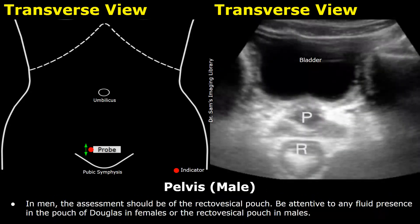In males, you will find the bladder, and posterior to the bladder you will find the prostate. The rectum will be posterior to the prostate. The pelvic bone shadows are visible here. The area of interest will be between the rectum and the prostate, known as the recto-vesical pouch — this is the region where free fluid will be found.